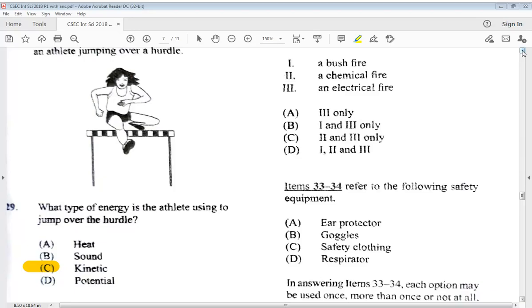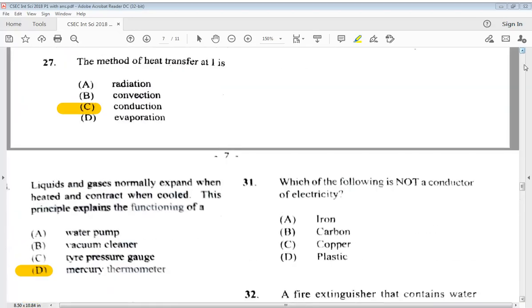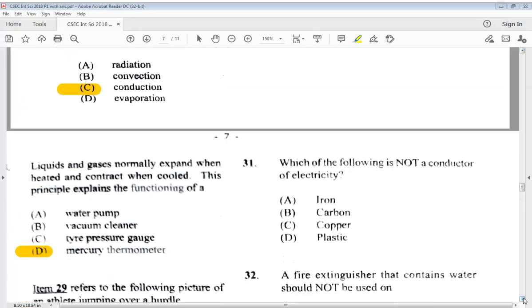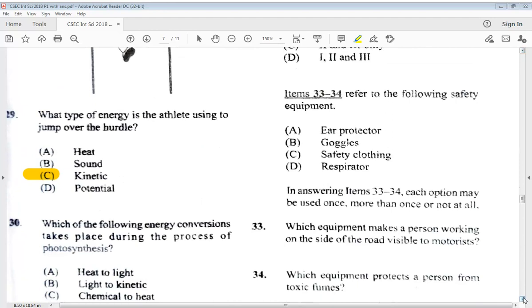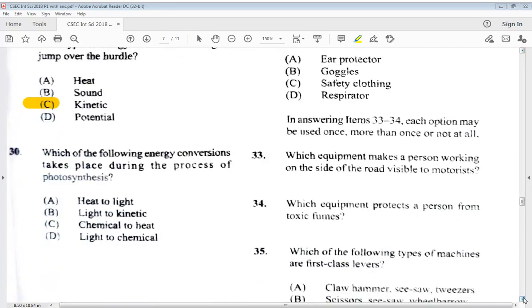Let's go to number 30. It says, which of the following energy conversions takes place during the process of photosynthesis? A, heat to light, B, light to kinetic, C, chemical to heat, D, light to chemical. So we know the answer is D, light to chemical.